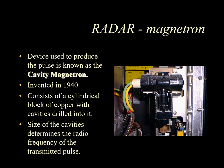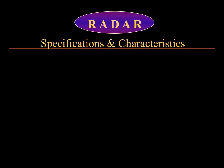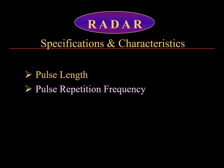The magnetron is a device in the radar which produces the pulse. It is known as the cavity magnetron, which is a form of a valve. It was invented in the 1940s by Randall and Boot, and consists of a cylindrical block of copper with cavities drilled into it. The size of the cavities dictates the radio frequency of the transmitted pulse. The device converts a voltage into a burst of radio waves with a centimetric wavelength — the 3 cm and 10 cm wavelengths. The copper is surrounded by a powerful magnetic field which generates the high energy in the radio waves.